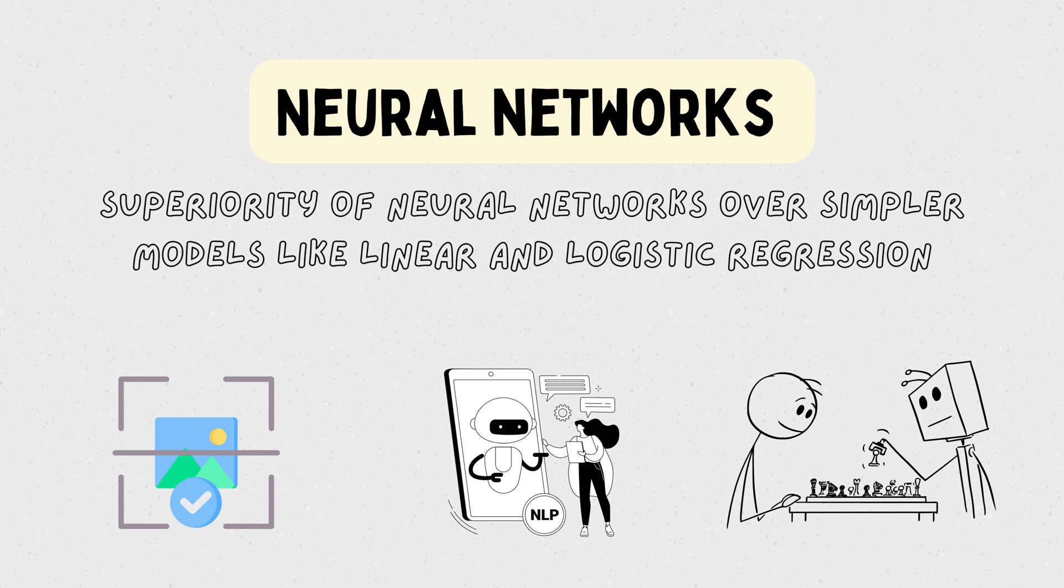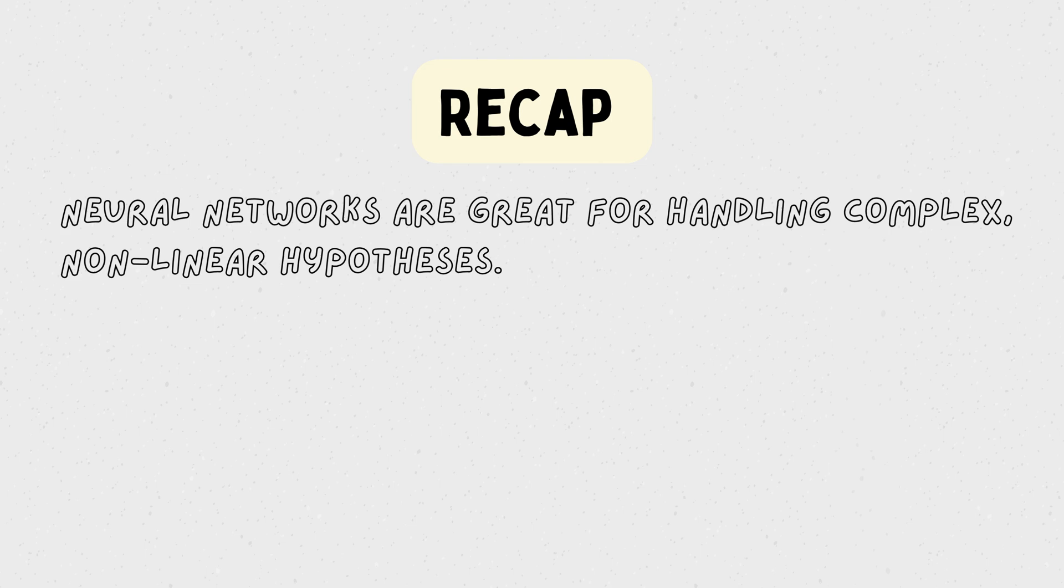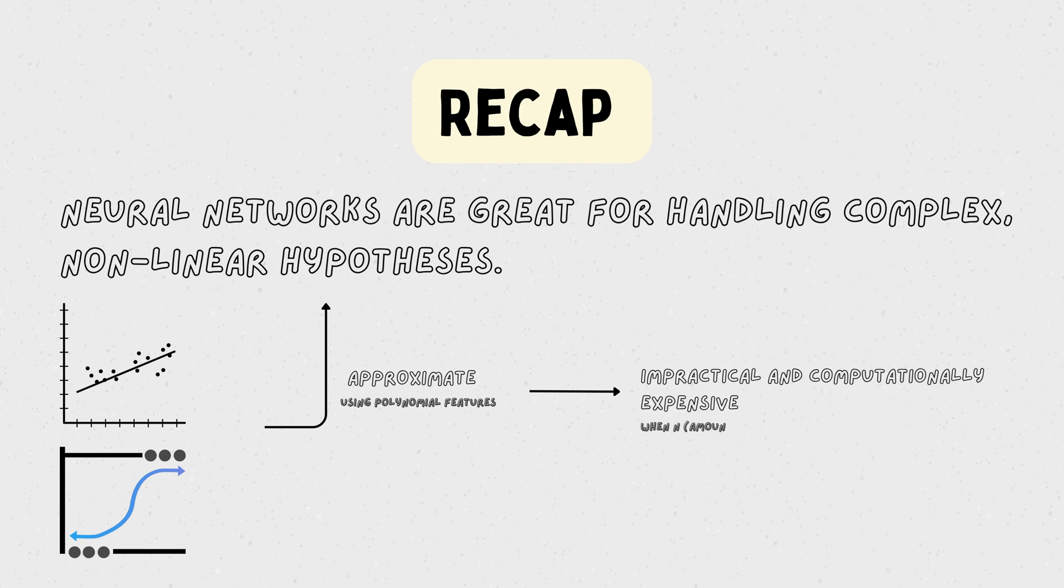So why use a neural network? The answer lies in the fact that neural networks are great for handling complex non-linear hypotheses. While linear and logistic regression can approximate non-linear relationships using polynomial features, this approach becomes impractical and computationally expensive as the number of features grows.